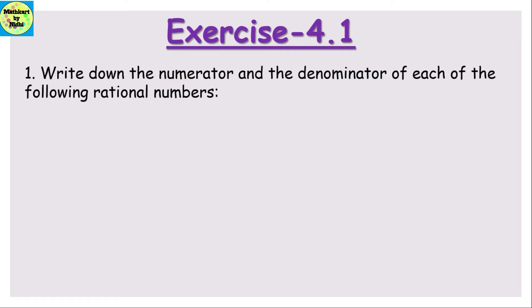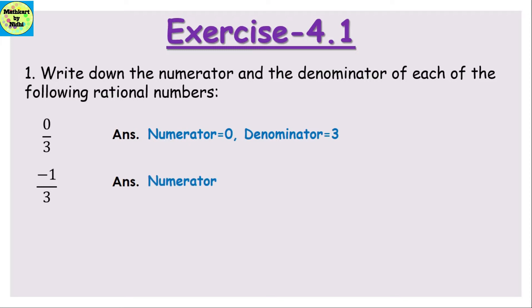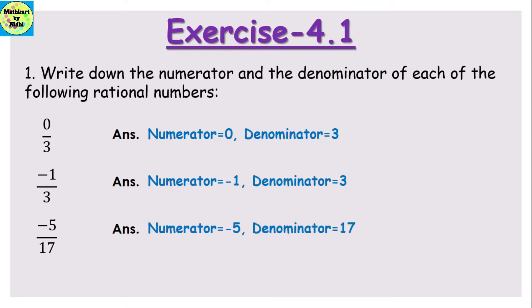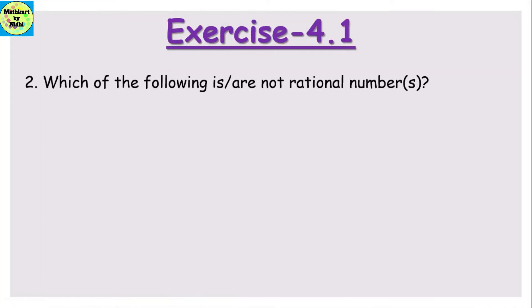Question number 1 says: write down the numerator and the denominator of each of the following rational numbers. The first part is 0/3, so the answer will be numerator is 0 and denominator is 3. Next part is -1/3: here numerator will be -1 and the denominator will be 3. For -5/17, numerator is -5 and denominator is 17.